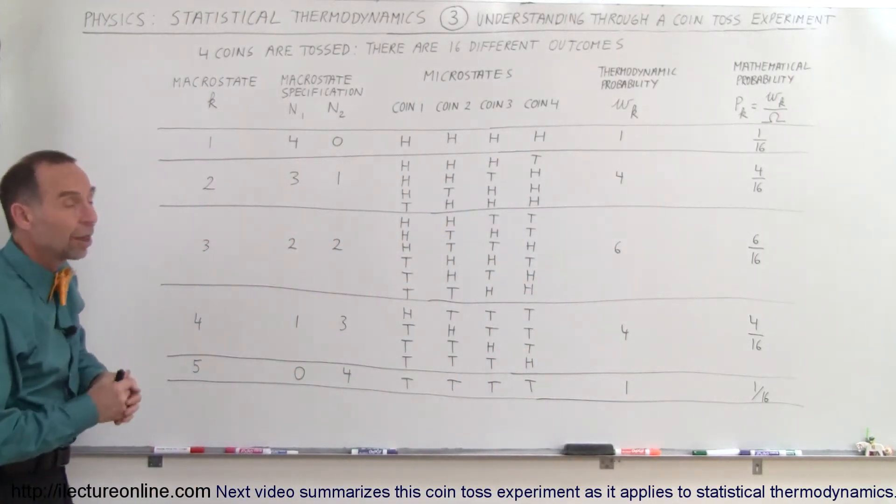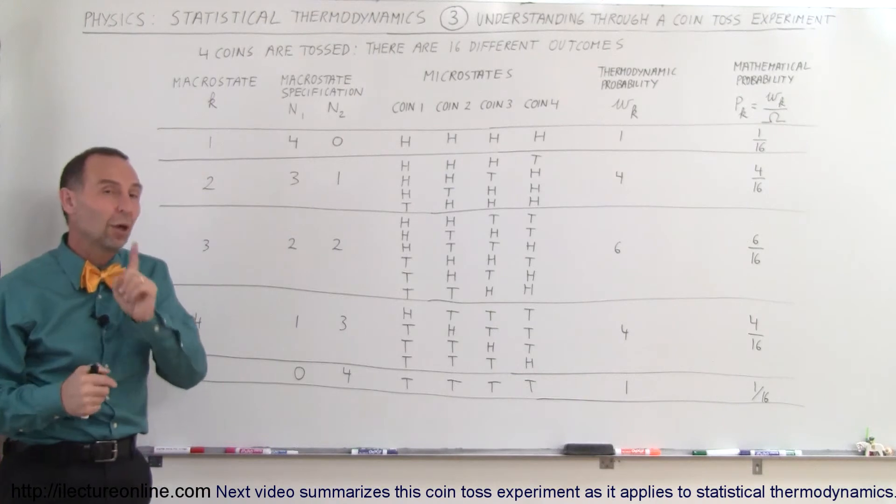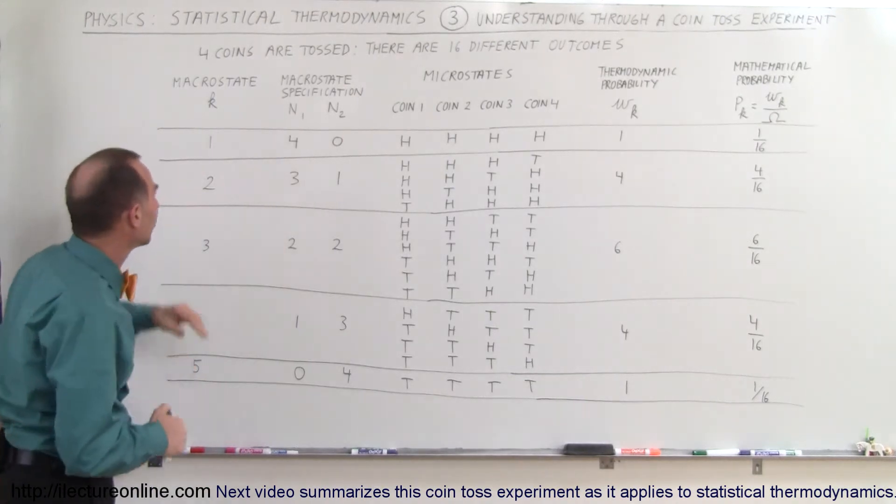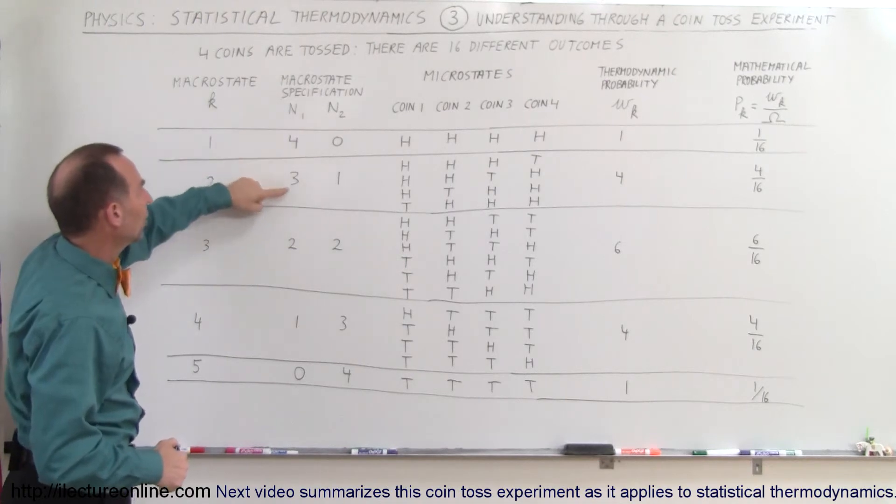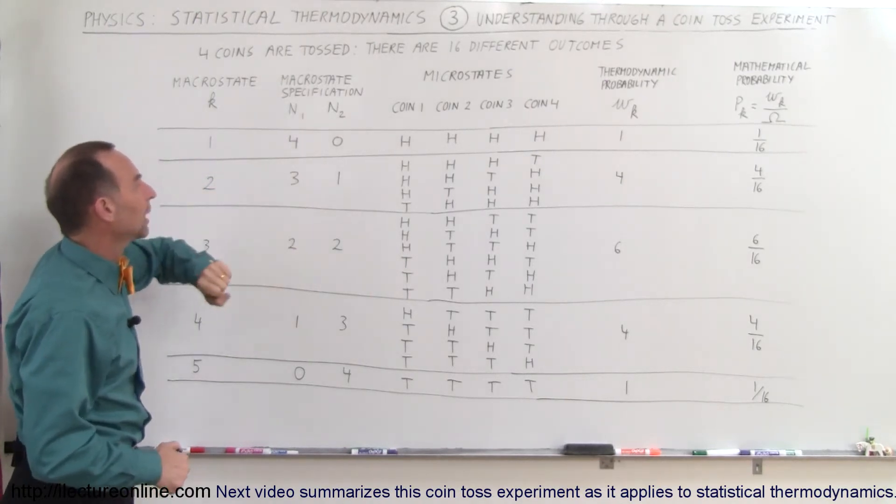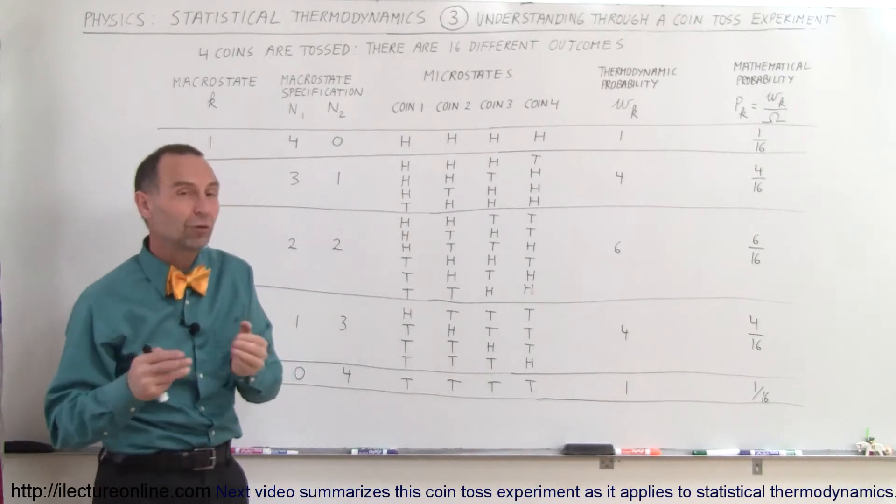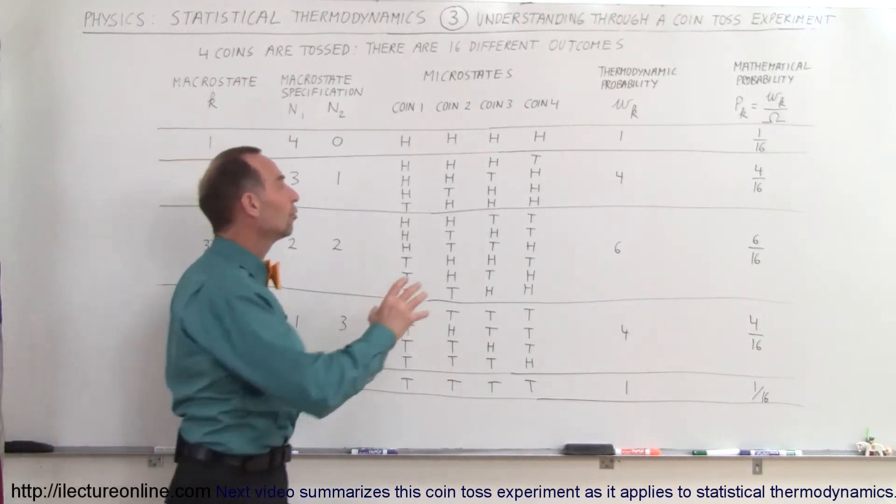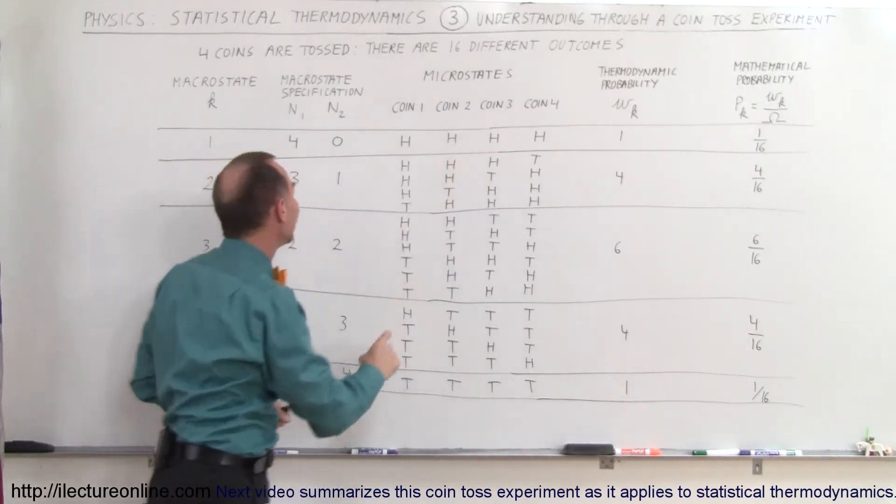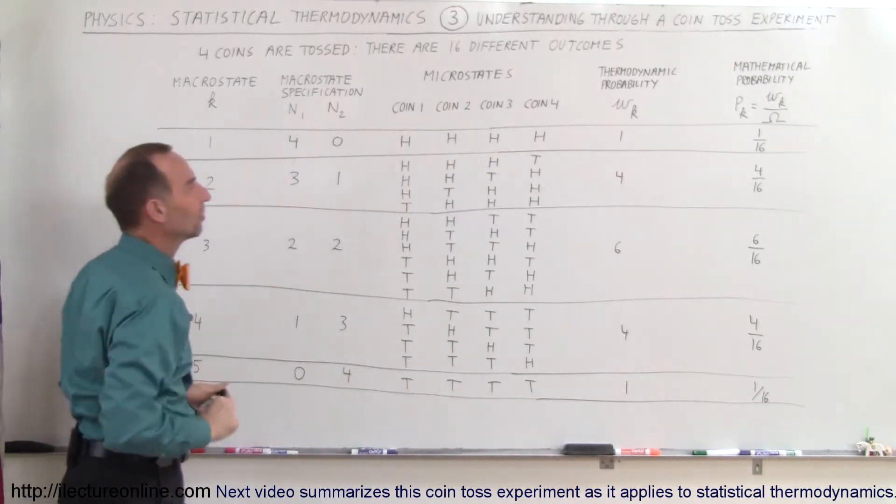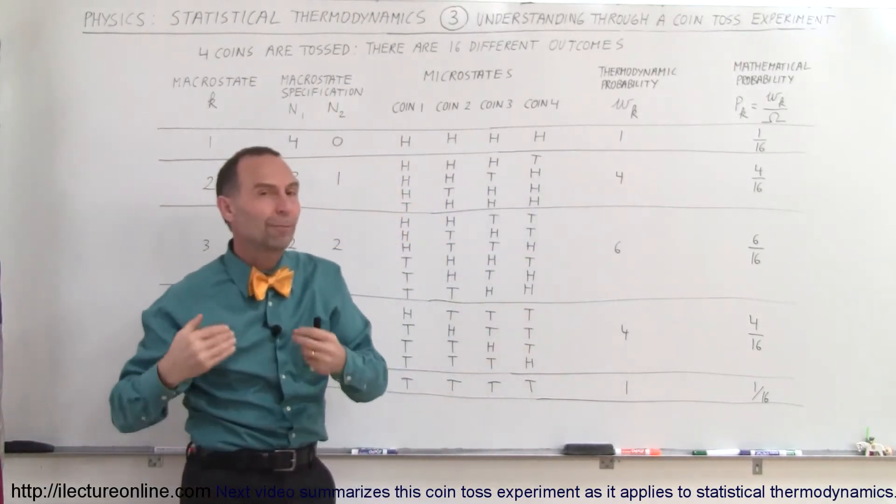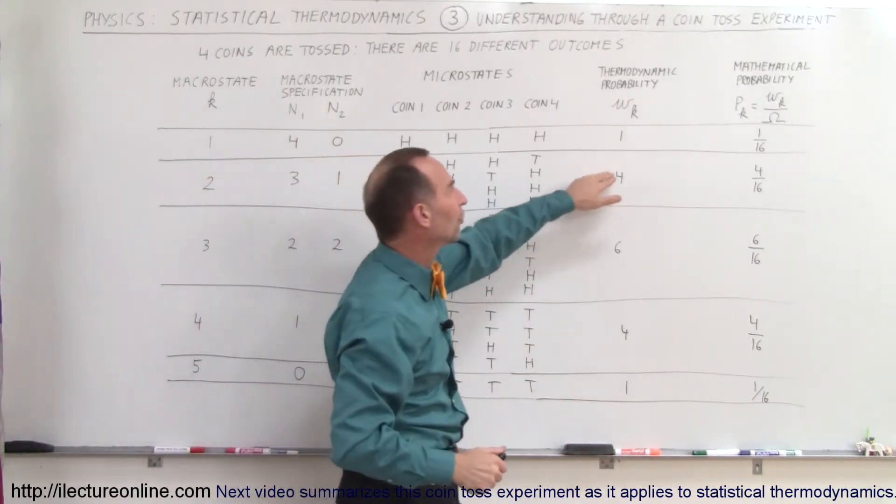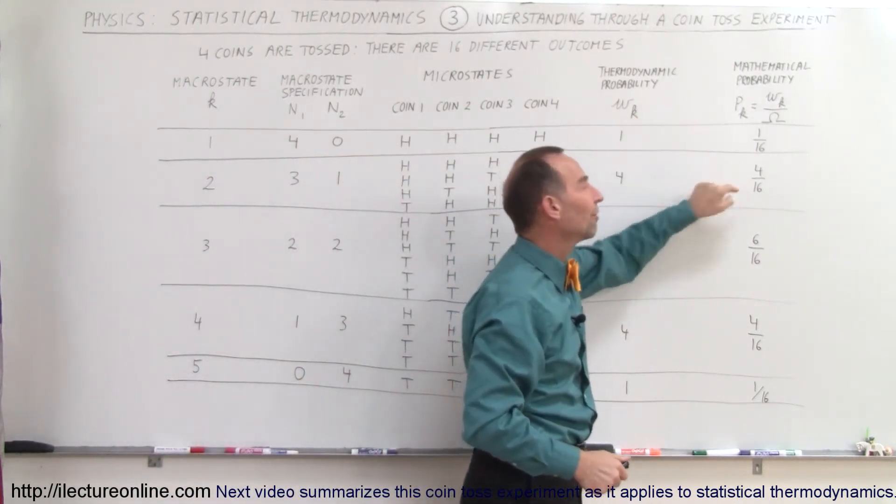It's also possible that three of the four coins come up heads, one comes up tails. That's our second macro state. The macro state specification: three come up heads, one comes up tails. You can see the four different arrangements. Since there's four different arrangements, there's four micro states in this one macro state. Therefore, the thermodynamic probability is 4, indicating the four micro states that can happen, and the mathematical probability is 4 divided by 16.